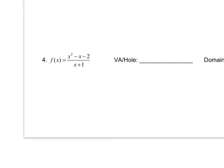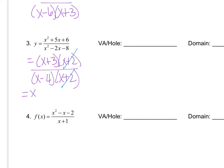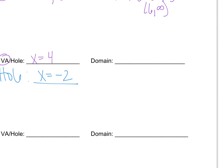In example three, we're going to have to factor both the numerator and the denominator. We do have a factor that cancels, so we are going to have a hole in the graph. Make sure you specify which one is the VA and which one is the hole — the hole is at x equals negative two. When we find the domain, we have to break at both the hole and the VA: negative infinity to negative two, union, negative two to four, union, four to positive infinity.